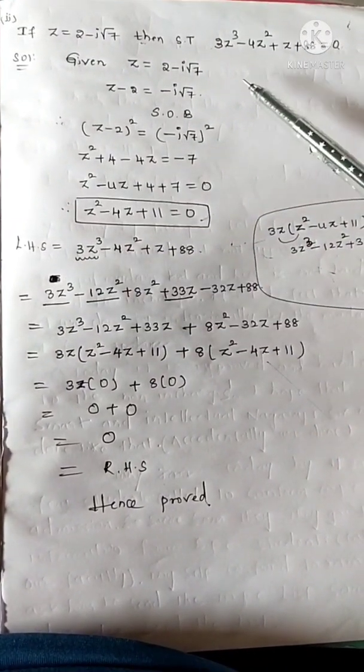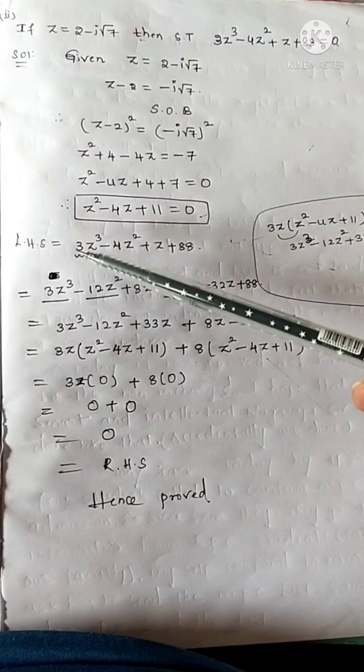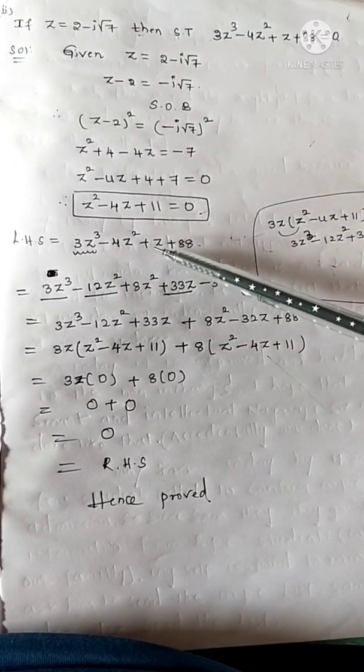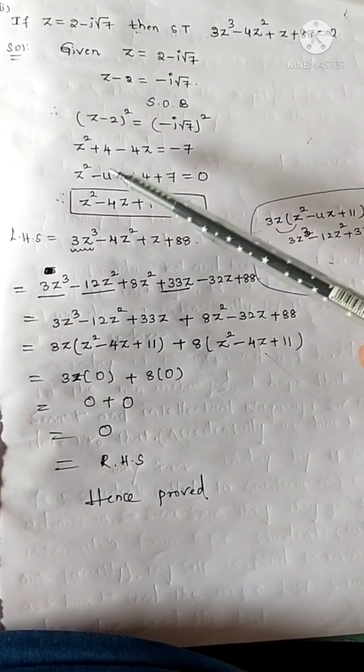Now, see the LHS. Write down the LHS: 3z cube minus 4z square plus z plus 88.